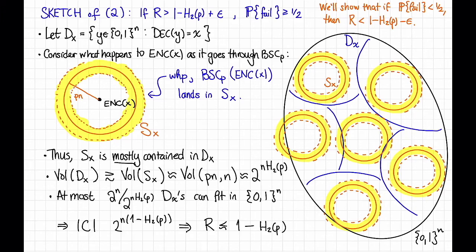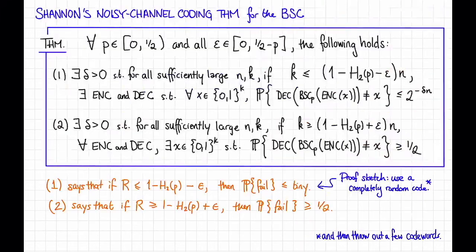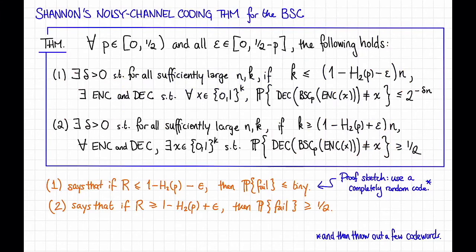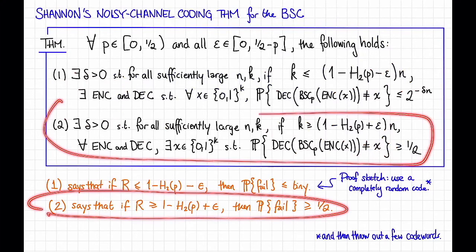I should have put some squiggly squigglies here too. And if you trace back all of the approximations that we made, and if you're careful about it, you'll see that the correct way to resolve these approximations is to say that the rate is less than or equal to 1 - H(P) + ε. And basically the smaller epsilon is, the larger n has to be.